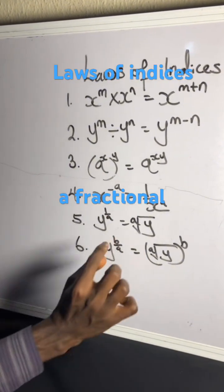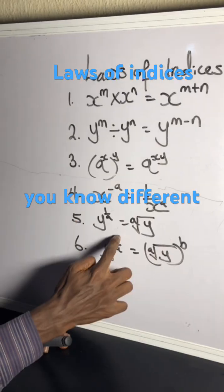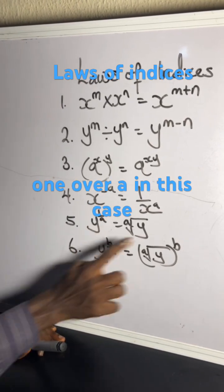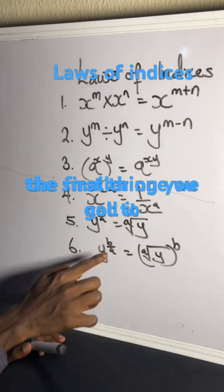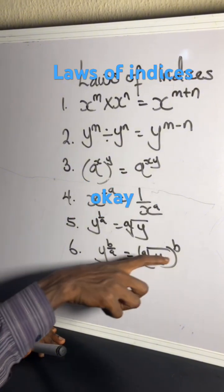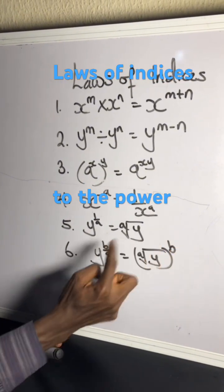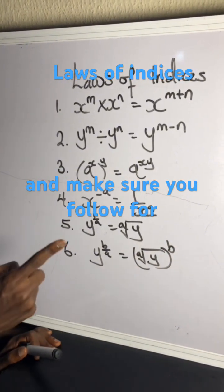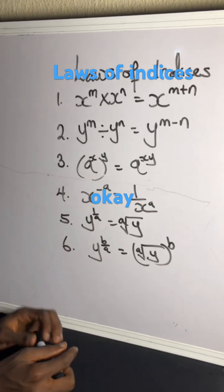The last but not the least: when you have a fractional index such as b over a — not one over a — in this case, you deal with the denominator first, then raise to the power of the numerator. I'll see you in the next one — make sure you follow for more. Thank you for watching.